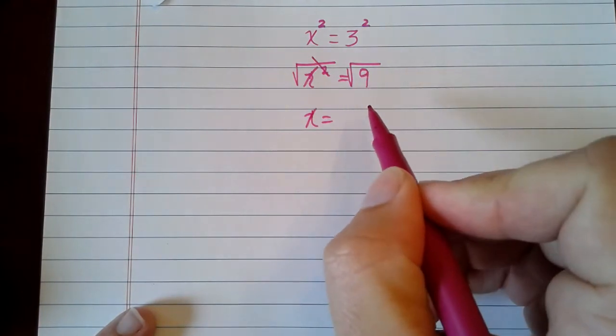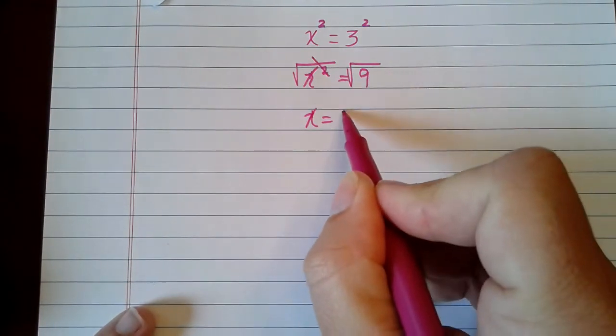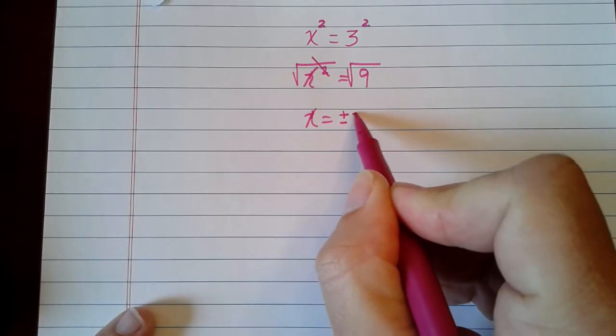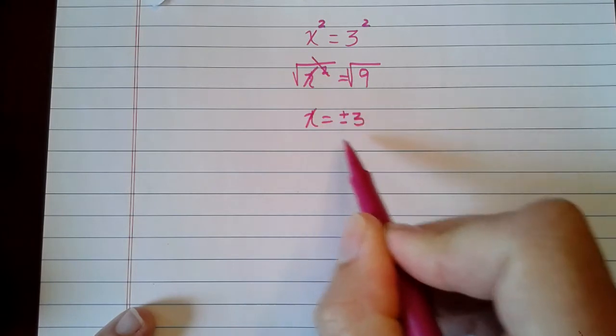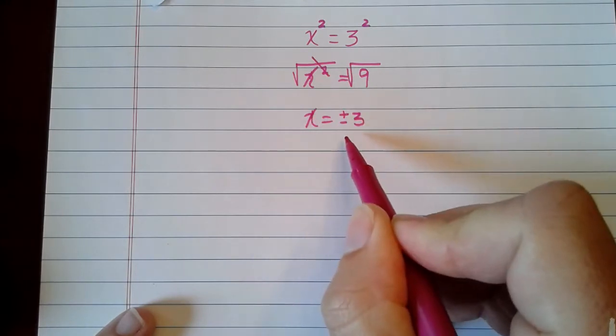Well, to be very clear, the square root of 9 is positive negative 3, which means my two solutions to this equation that I just solved are 3 and negative 3.